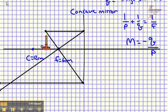And what we get is the approximate location, that means that the tip of the candle flame is going to be right here, and the candle is going to be inverted upside down, but in this case you can see that it's going to be bigger, it's going to be magnified.